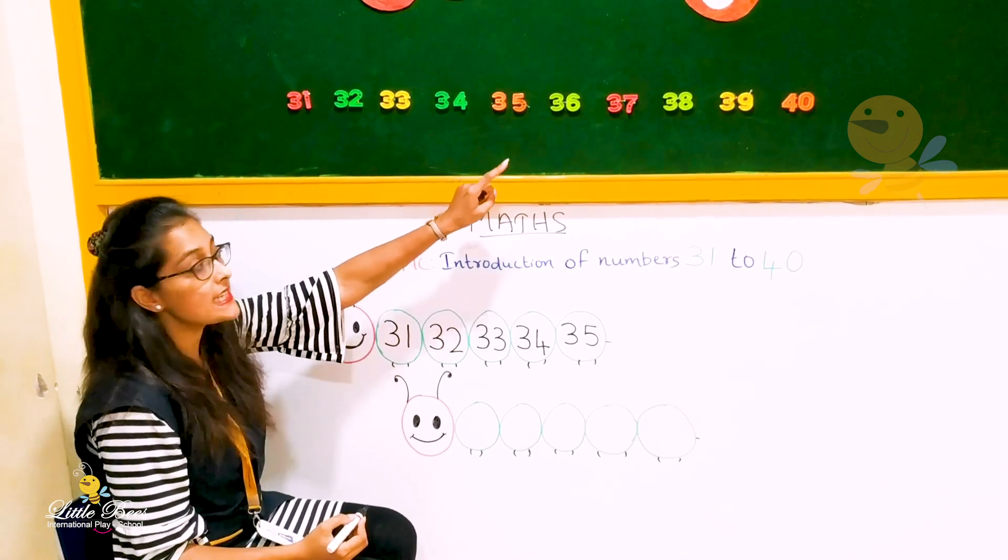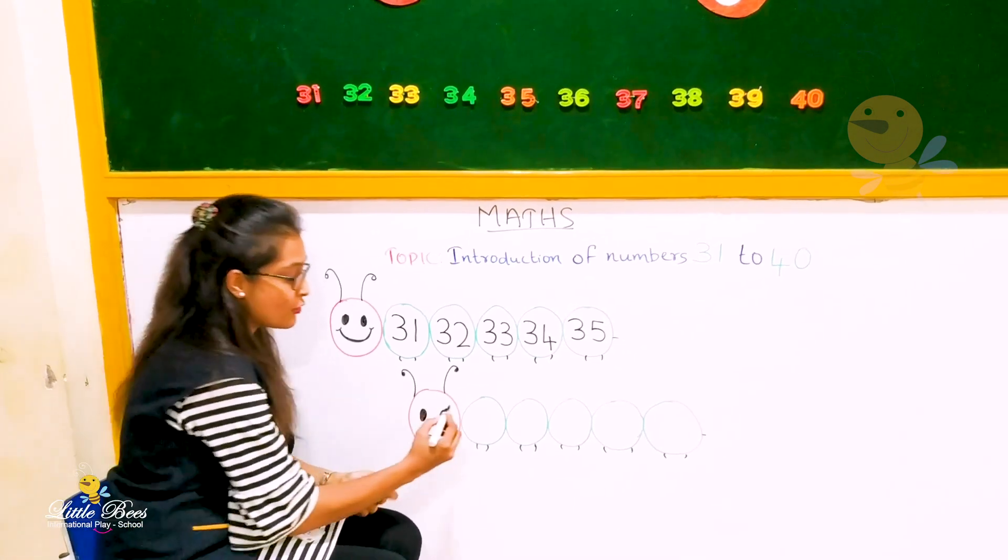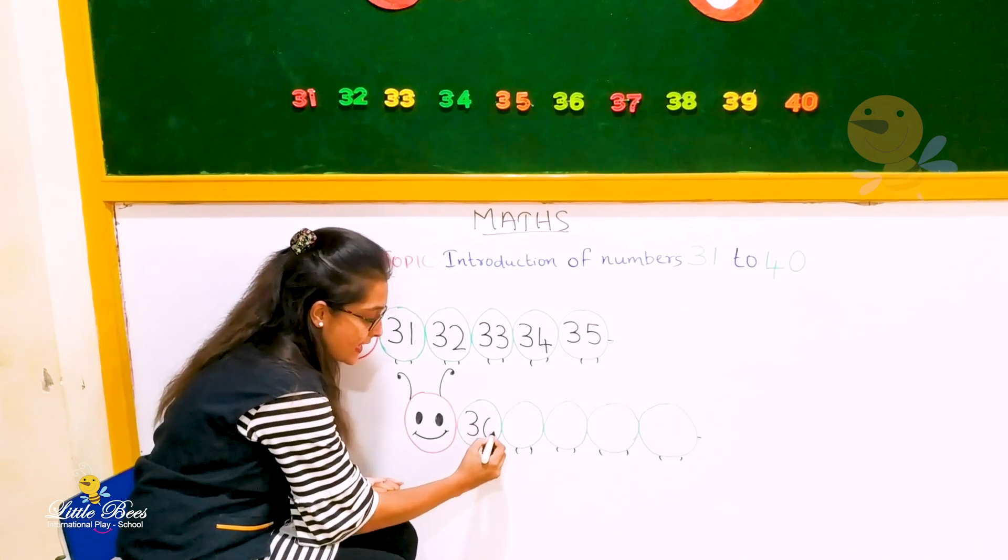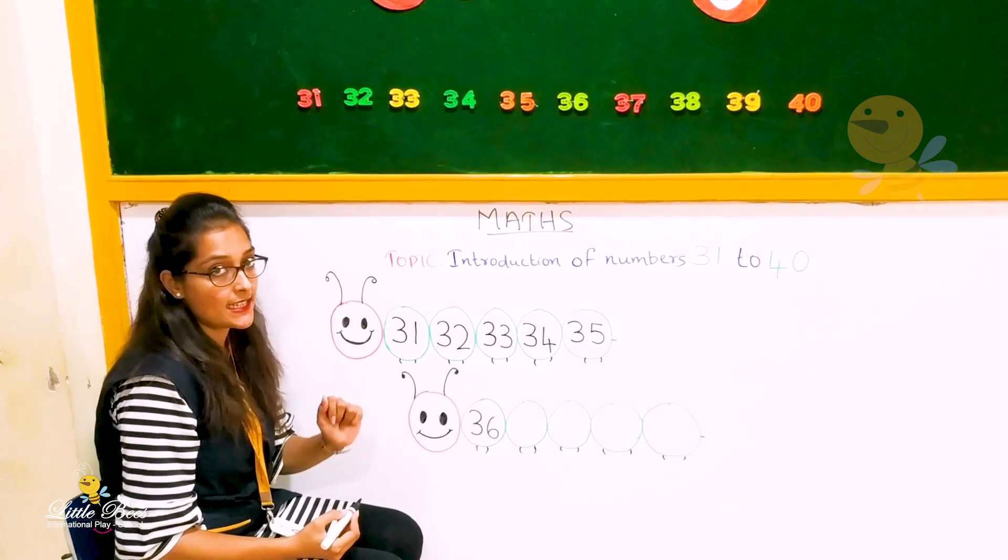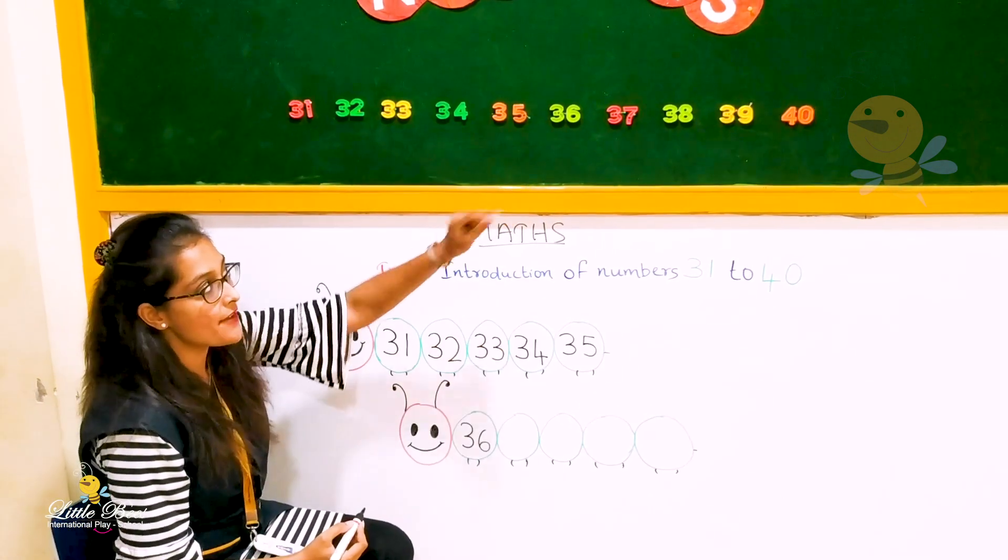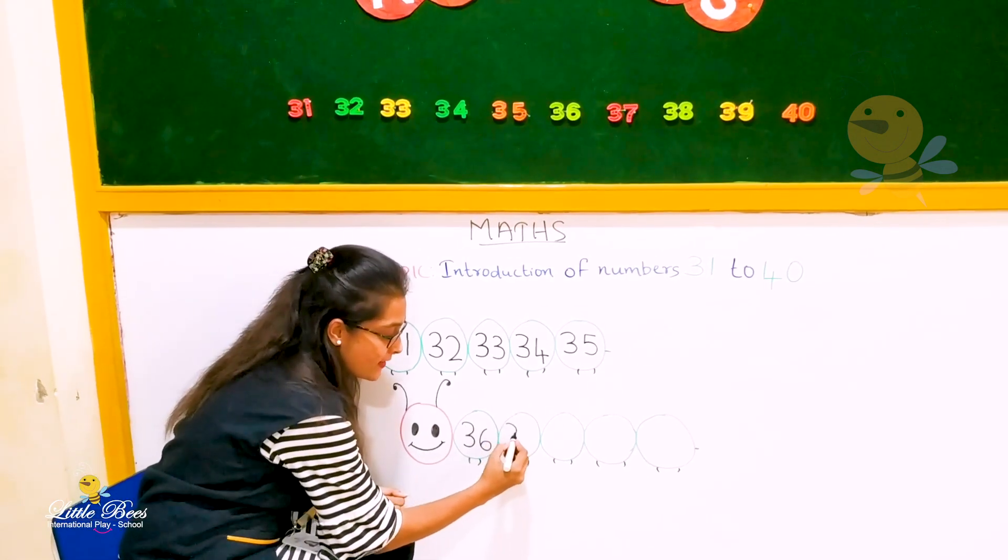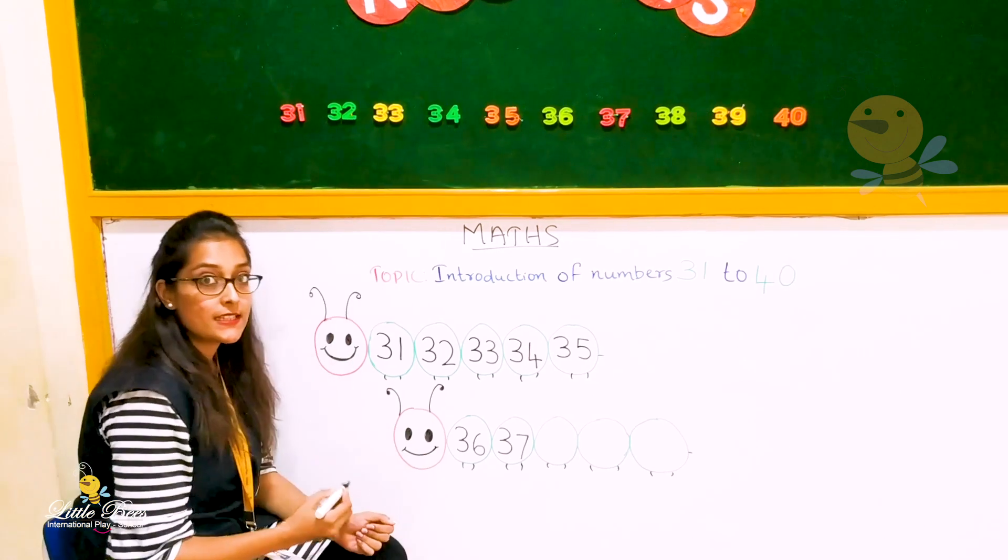Next number is 3, 6, 36. How do we write? 3, 6, 36. And what is after 36? 3, 7, 37. How do we write that? 3, 7, 37.